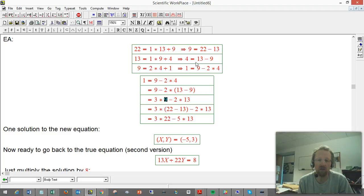Now, that nine can be expressed in terms of my original numbers and I'm almost done. So it's three times the quantity twenty-two minus thirteen, minus two times thirteen, expand and simplify, and you get a not terribly surprising answer, three times twenty-two minus five times thirteen. Now remember, x was the one that was paired with the thirteen, so our solution is x is minus five, y equals three.